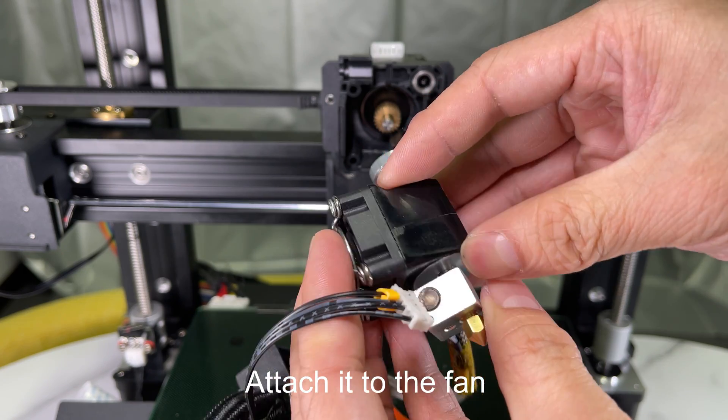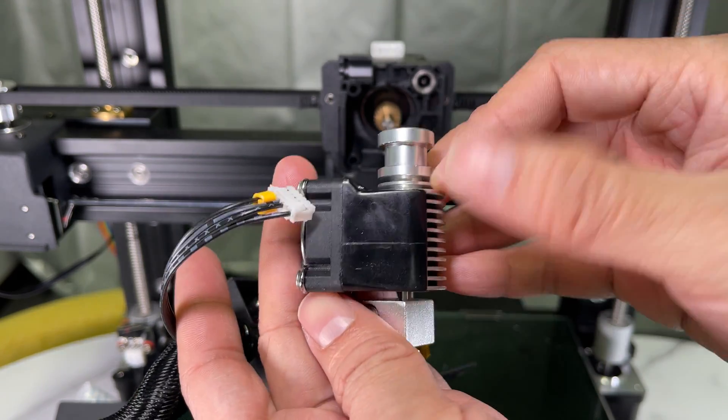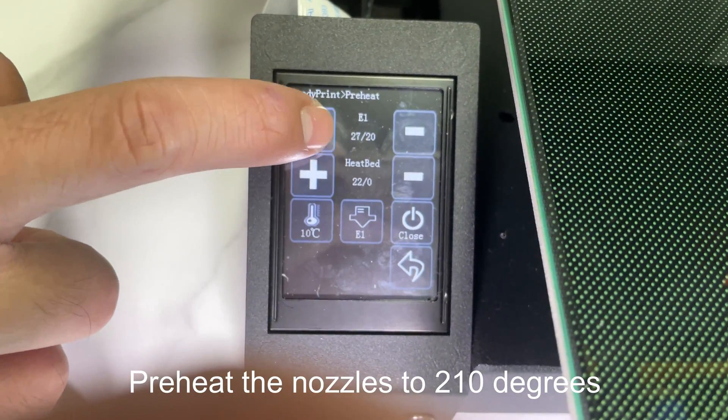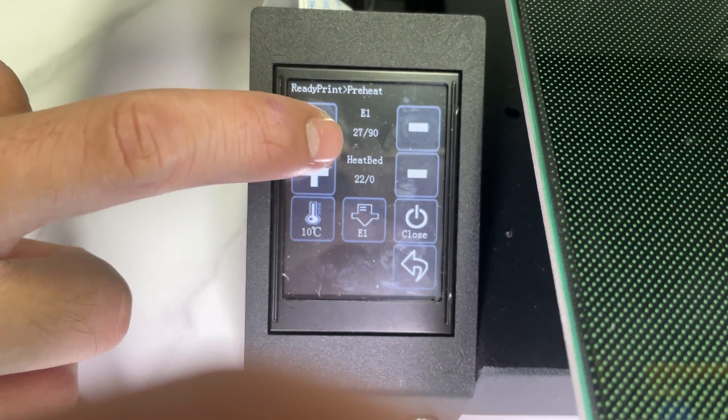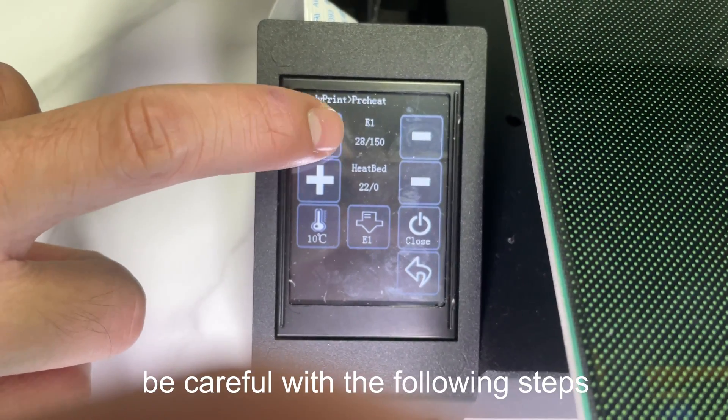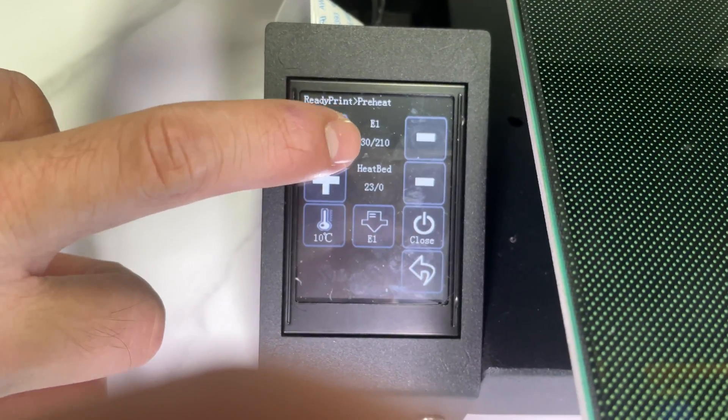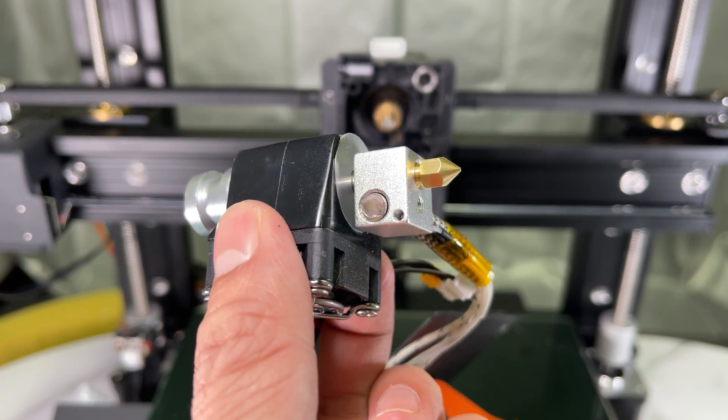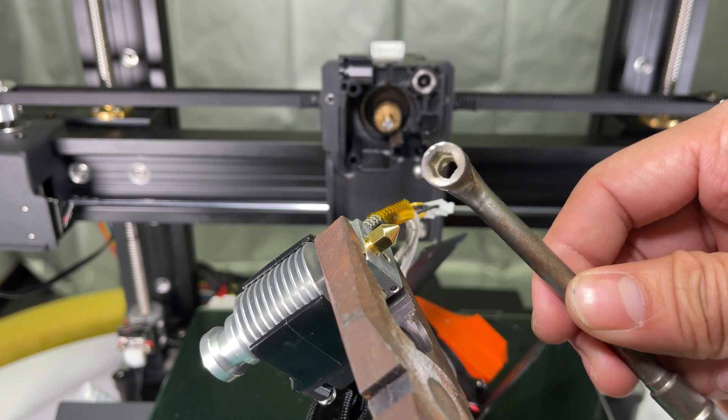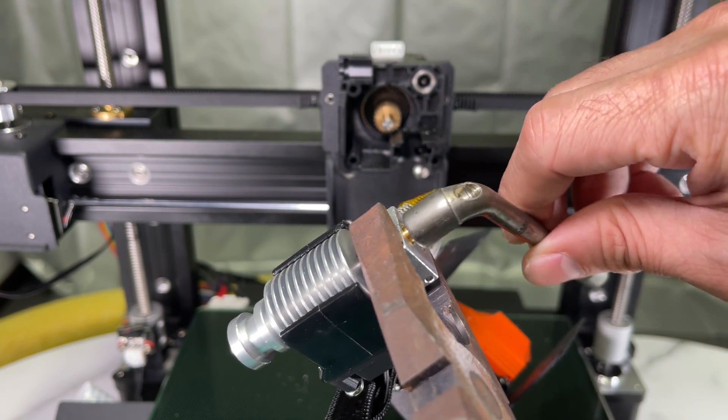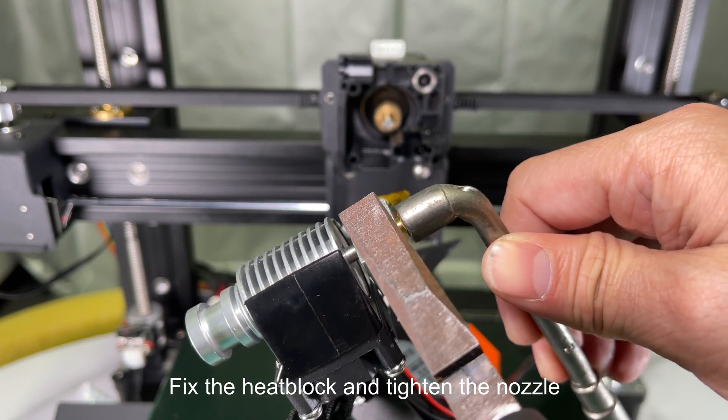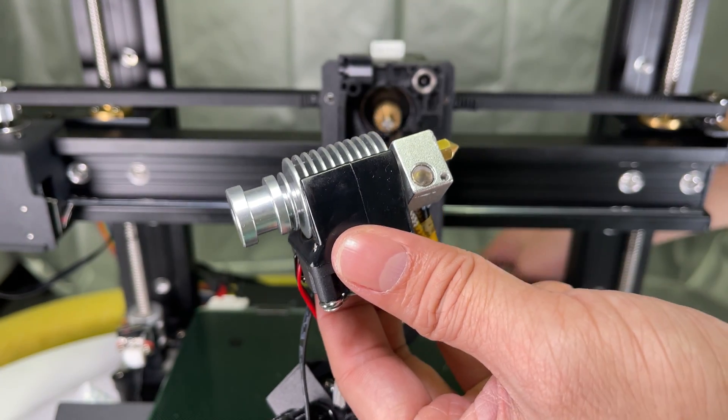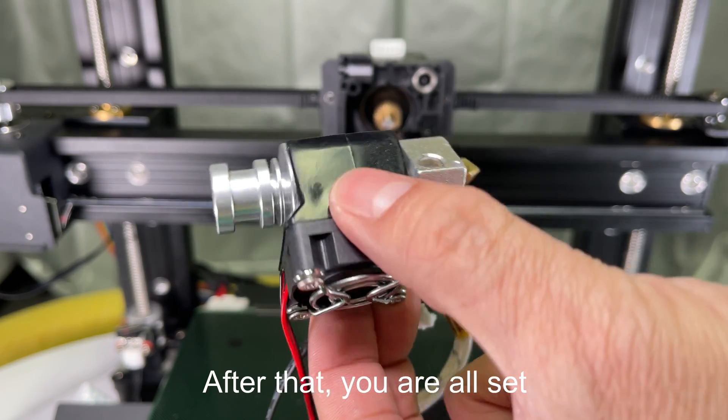Attach it to the fan. Turn on the printer again. Preheat the nozzles to 210 degrees. Be careful with the following steps. Hold the fan tight in this way. Wait for the nozzle heating. Once the temperature is reached, fix the heat block and tighten the nozzle. Then tighten the throat tube. After that, you are all set.